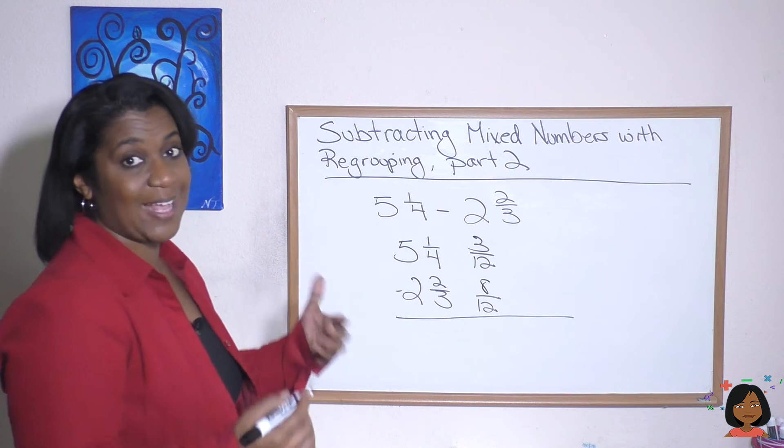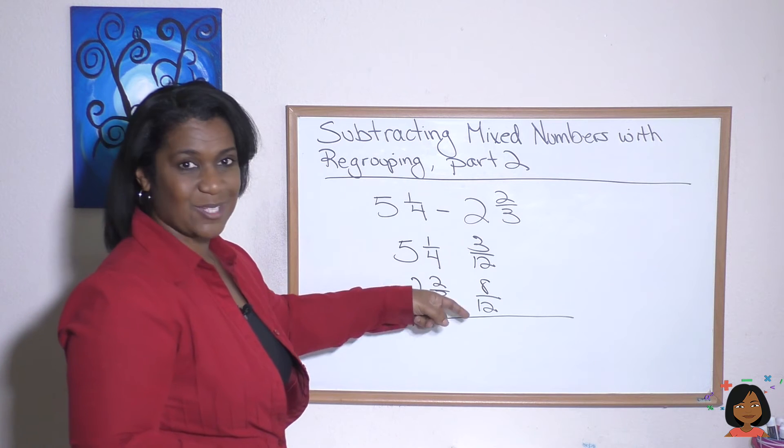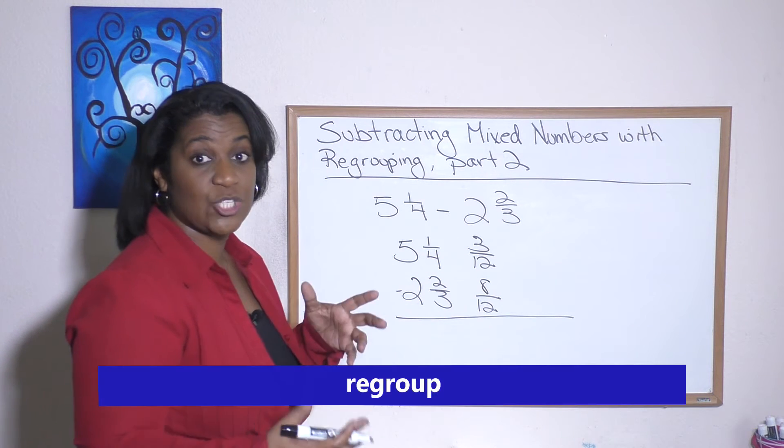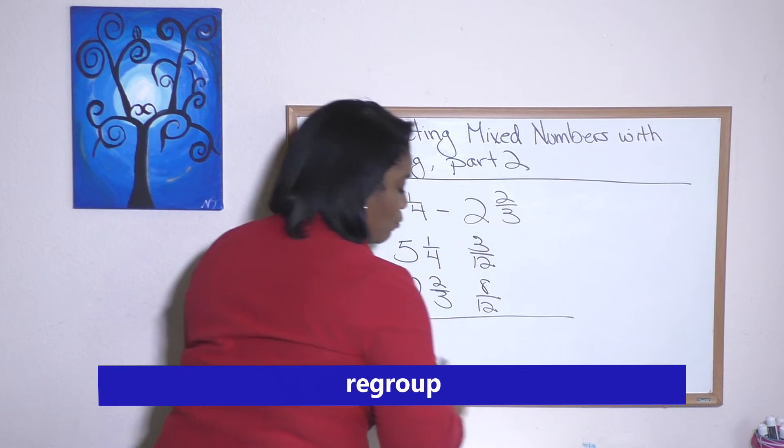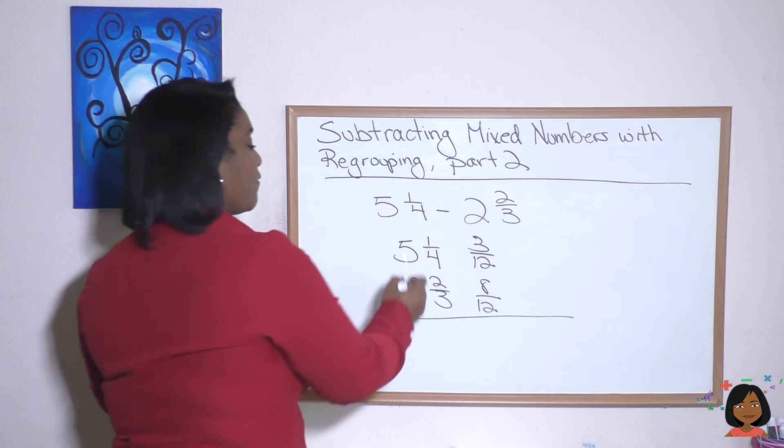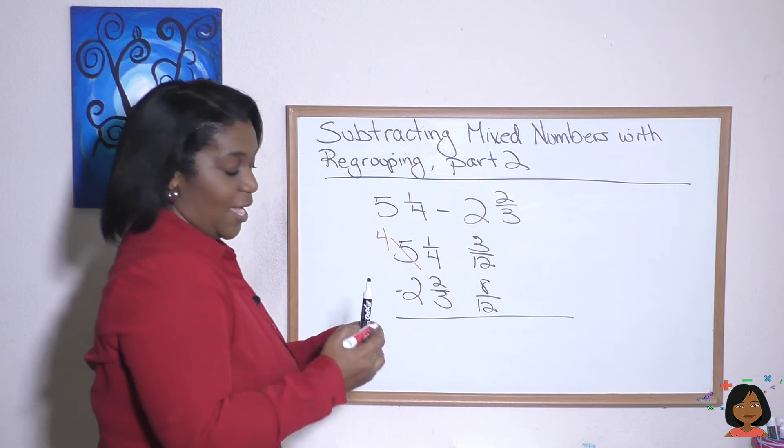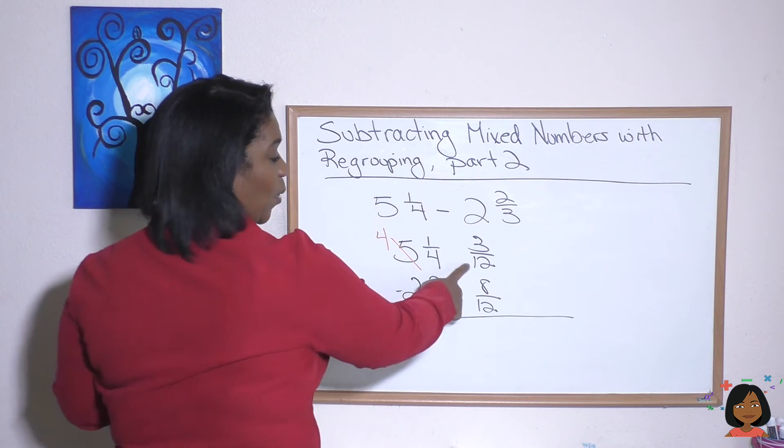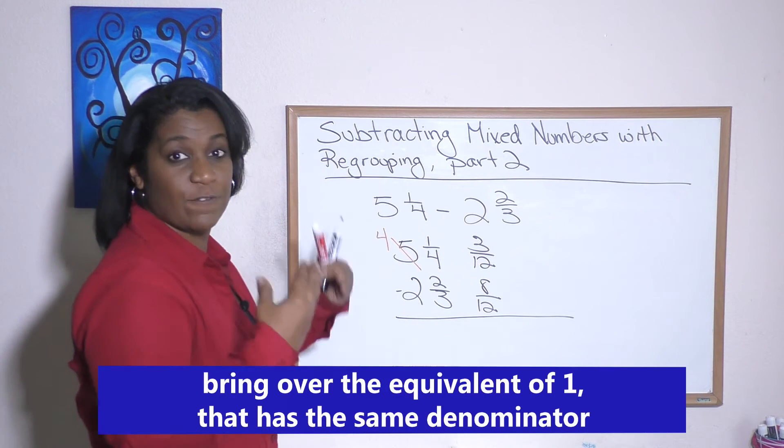At this point, we would naturally subtract our fractions, but you can see we have a problem. Three twelfths minus eight twelfths. So we need to regroup. We're going to go back over here to our five. I'm actually going to use red. We're going to cross out our five and we're going to take one and bring it over to the fraction side. But since the denominator we're working with is 12, we're going to bring that one over as 12 twelfths.